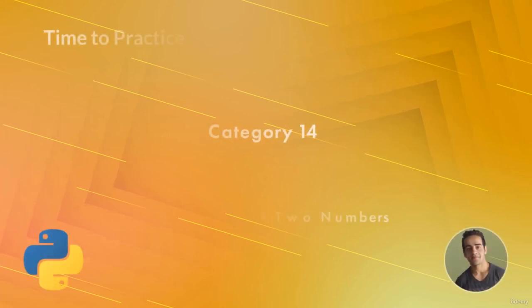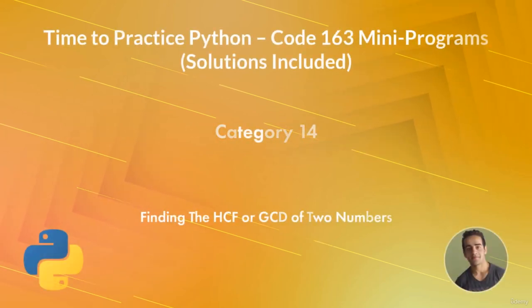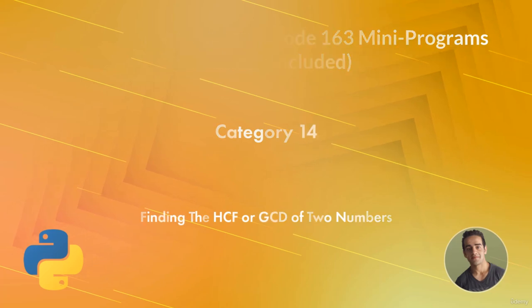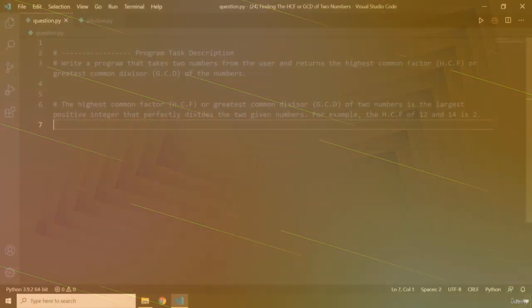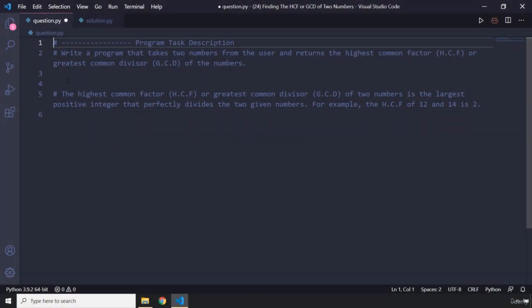Hi everyone. In this program you're going to find the HCF or GCD of two numbers. You're going to write a program that takes two numbers from the user and returns the highest common factor or the greatest common divisor of the two numbers.